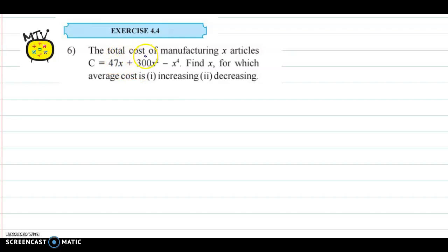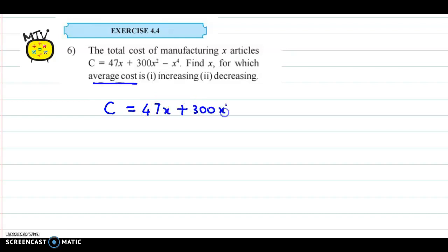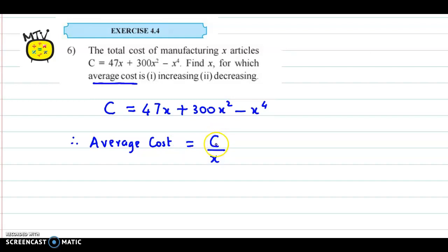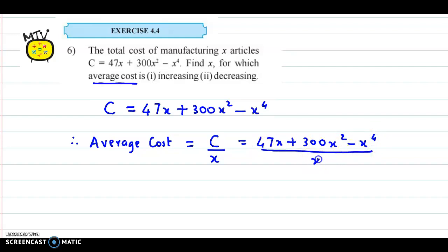Here we have the total cost function, but we need increasing and decreasing for average cost. So our focus is on average cost. First we have the total cost function, that is c equal to 47x plus 300x square minus x raised to 4. Now we convert to average cost per unit. Therefore, the average cost is given by c divided by x — the total cost upon number of articles, that is x. So this would be equal to 47x plus 300x square minus x raised to 4, divided by x.